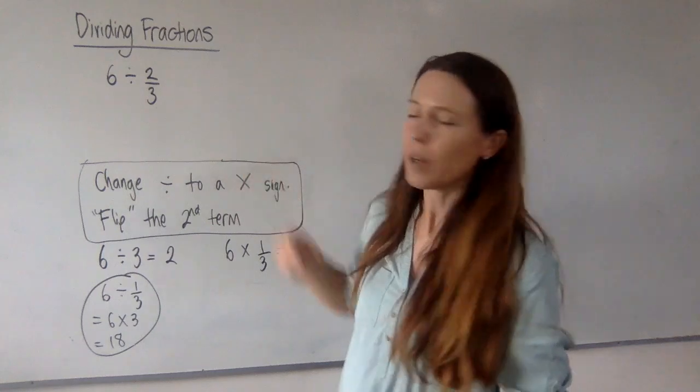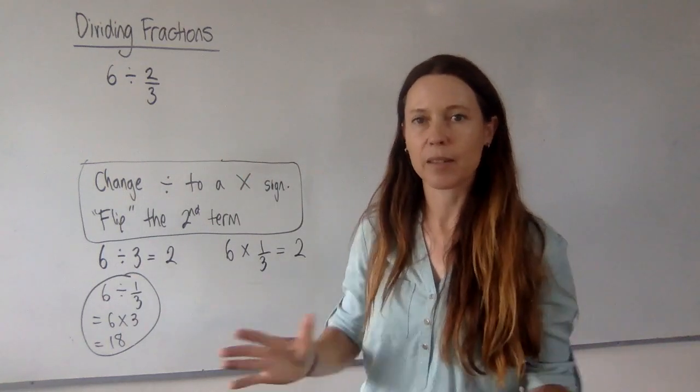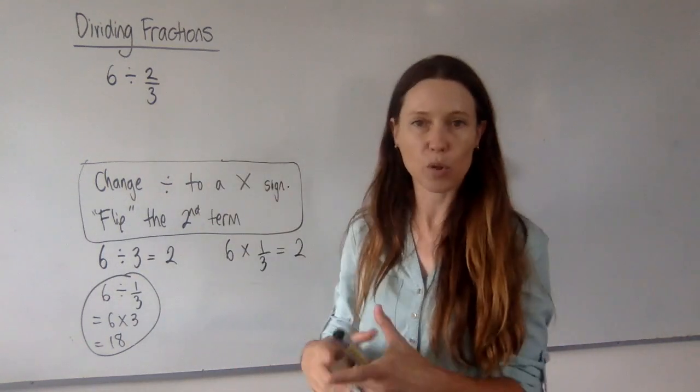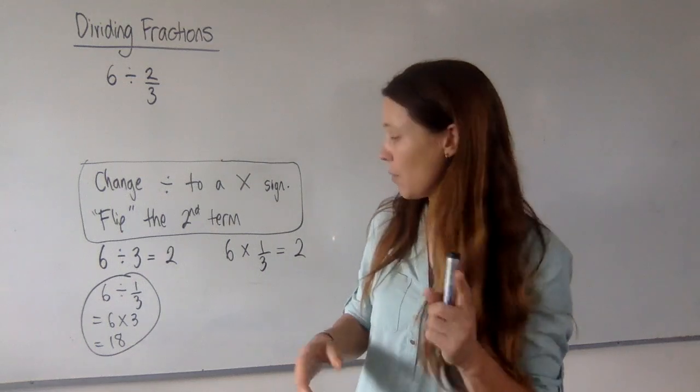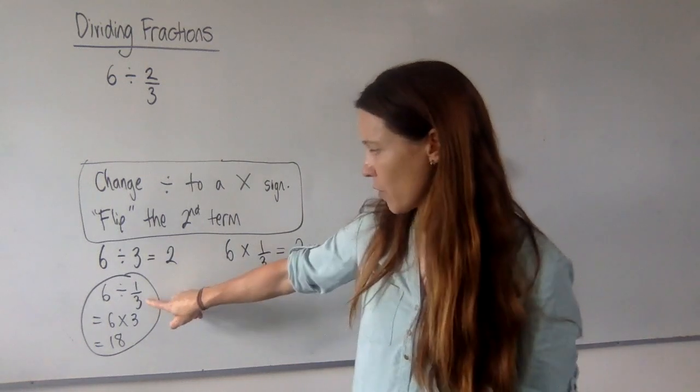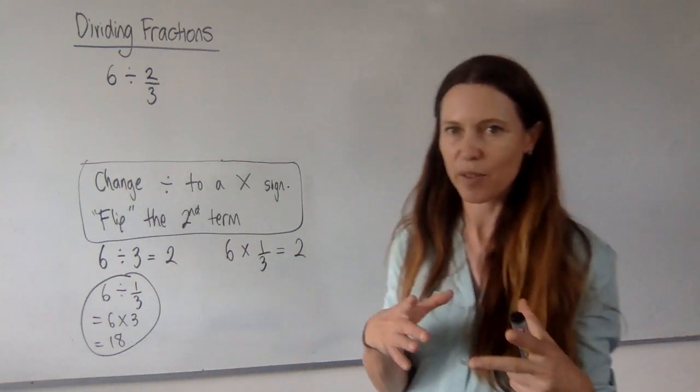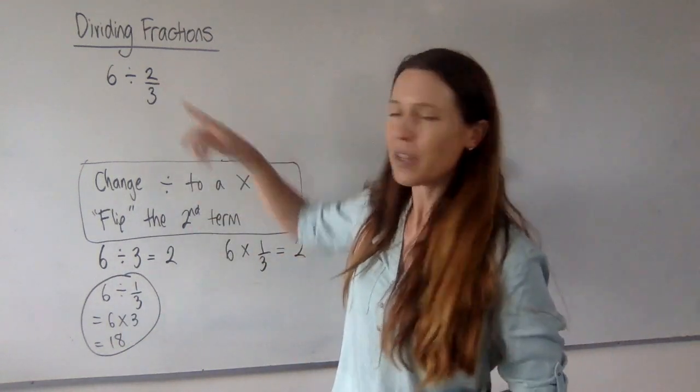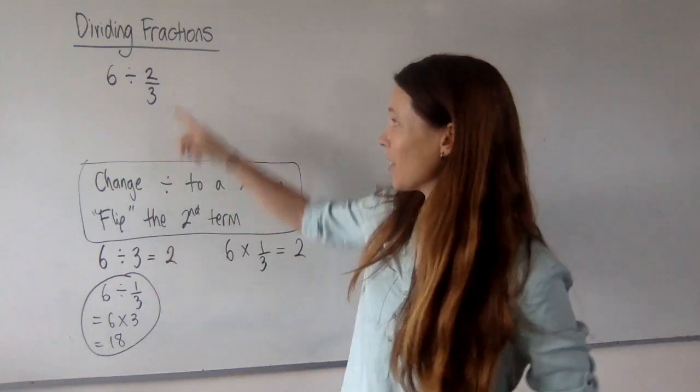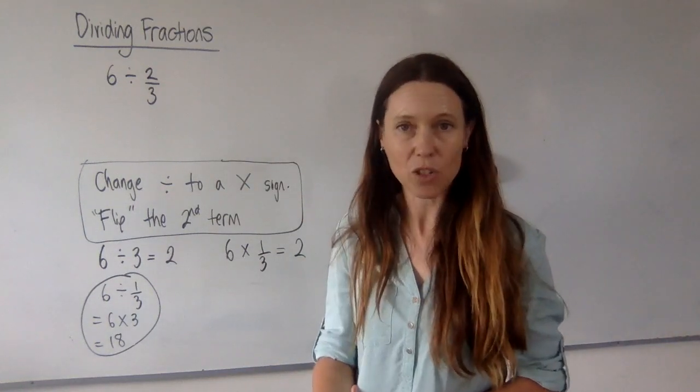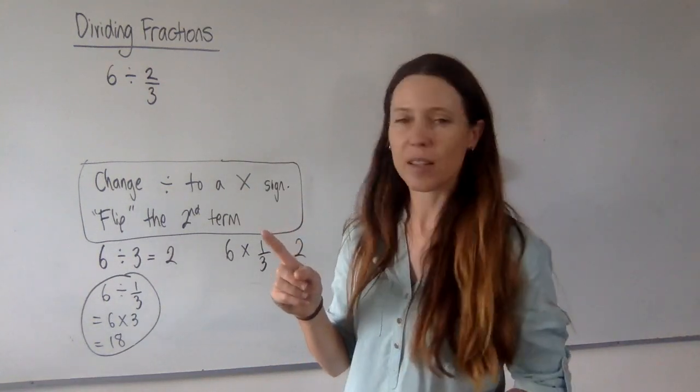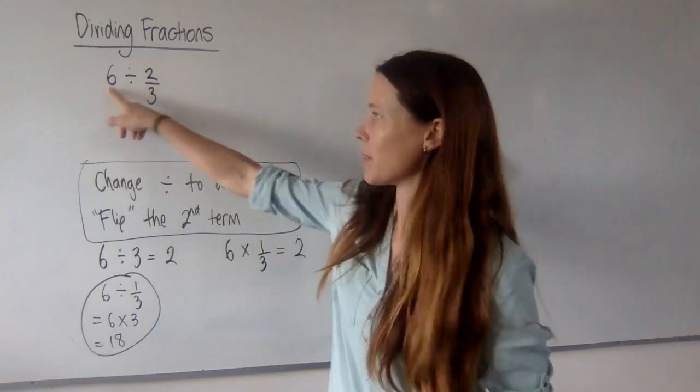Okay, what about if we've got 6 pizzas and each person wants to eat 2 thirds of a pizza, how many people can we feed? Because if we're only looking at how many thirds of a pizza there are, we could feed 18 people if they're just getting a third of a pizza each. But if each person is eating twice that,